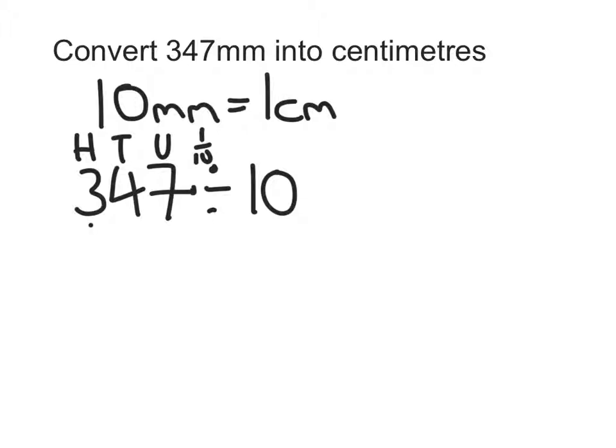So the 300s are moving 1 to the right so that goes into the tens column. The 4 tens go into the units, decimal place stays the same. The 7 units goes to the tenths column. So I have 34.7 centimetres.